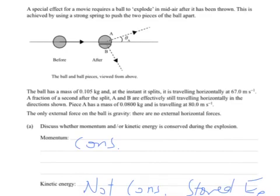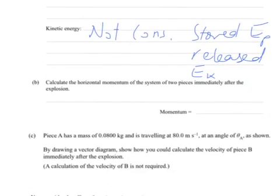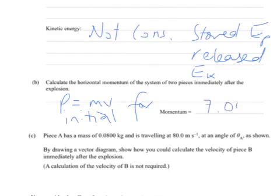So that's going to give us, what is it, approximately 7.035. So it's just P equals MV for initial conditions. Okay, and then you get 7 point, rounding to 3 significant figures is 7.04 kilogram meters per second.